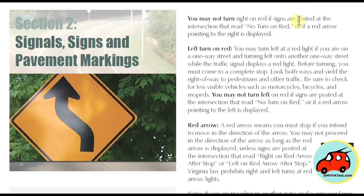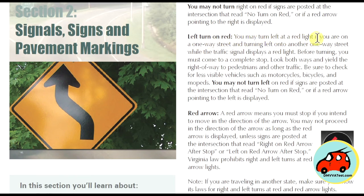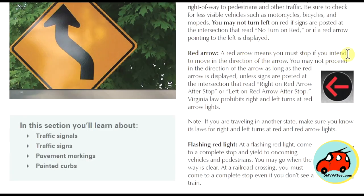You may not turn right on red if signs posted at the intersection say no turn on red, or if a red arrow pointing to the right is displayed. For a left turn on red, you may turn left on a red light if you are on a one-way street turning left onto another one-way street. Before turning, come to a complete stop, look both ways, and yield the right-of-way to pedestrians and other traffic. You may not turn left on red if signs say no turn on red or if the red arrow pointing left is displayed. You may not proceed in the direction of a red arrow unless signs are posted at the intersection reading right on red arrow after stop, or left on red arrow after stop.